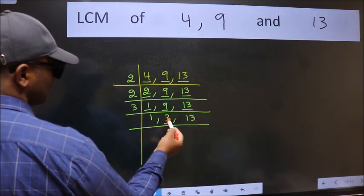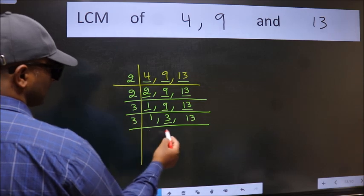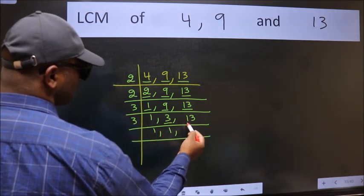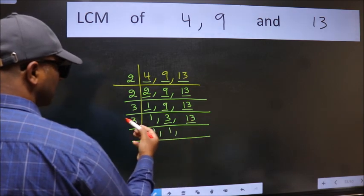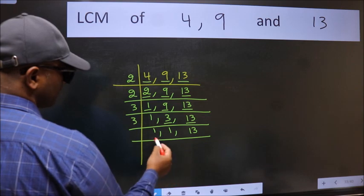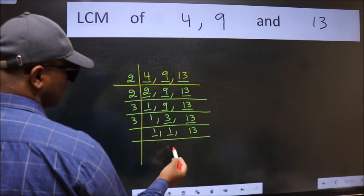Now here we have 3. 3 is a prime number, so 3 once is 3. The other number 13, not divisible by 3, so we write it down as it is. Now we got 1 here and here.